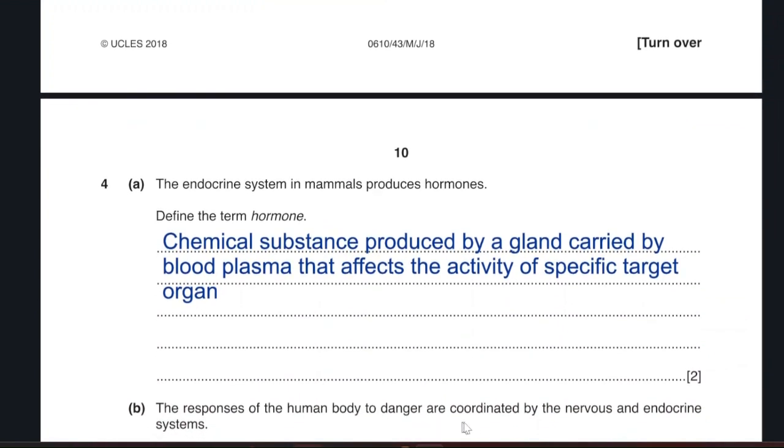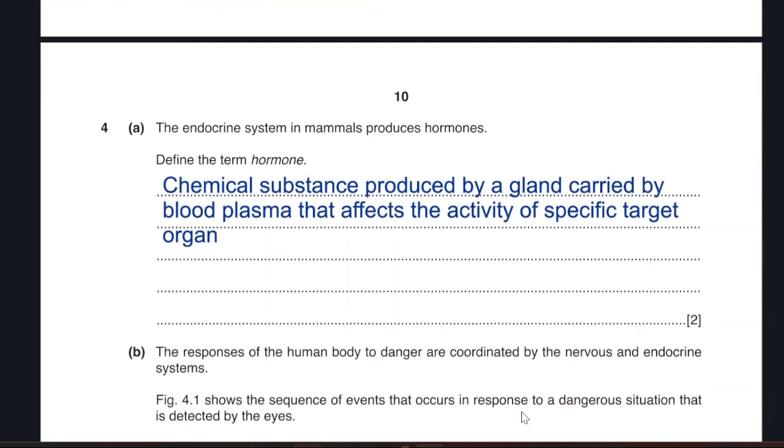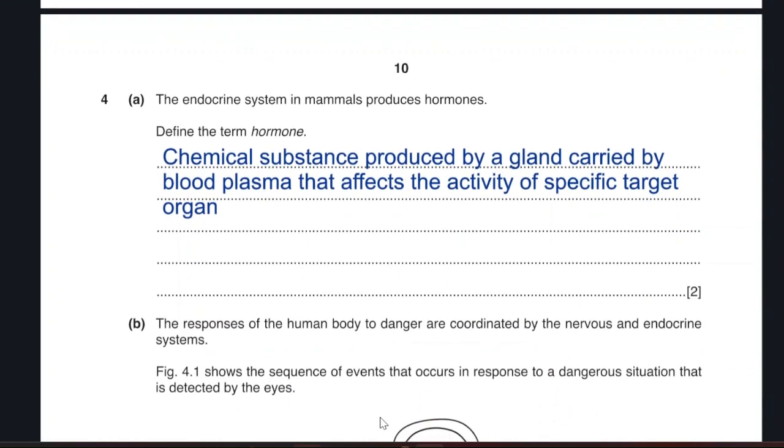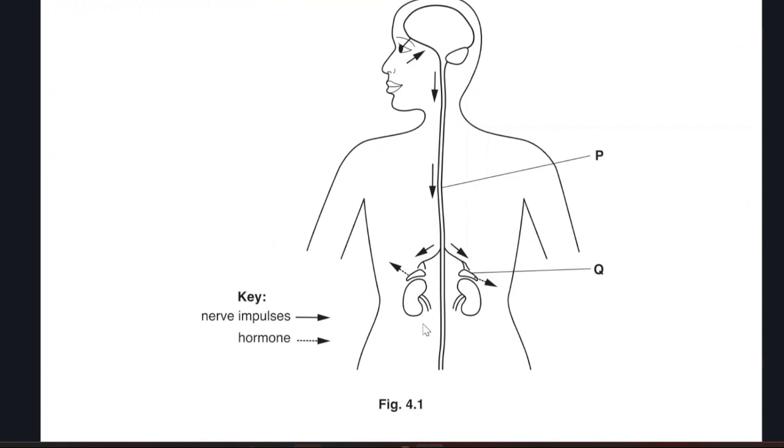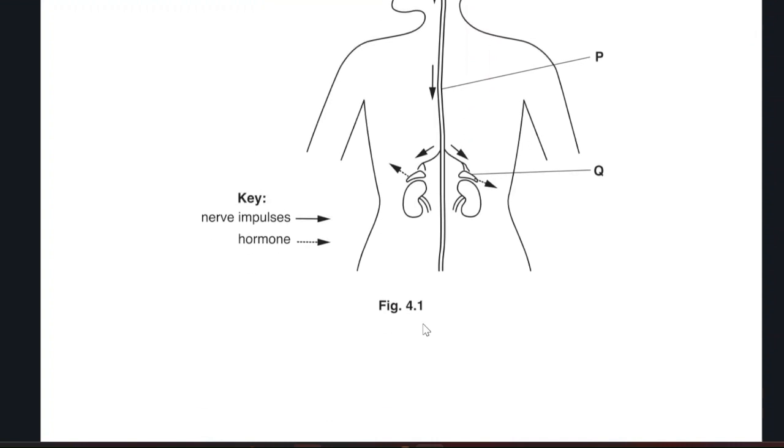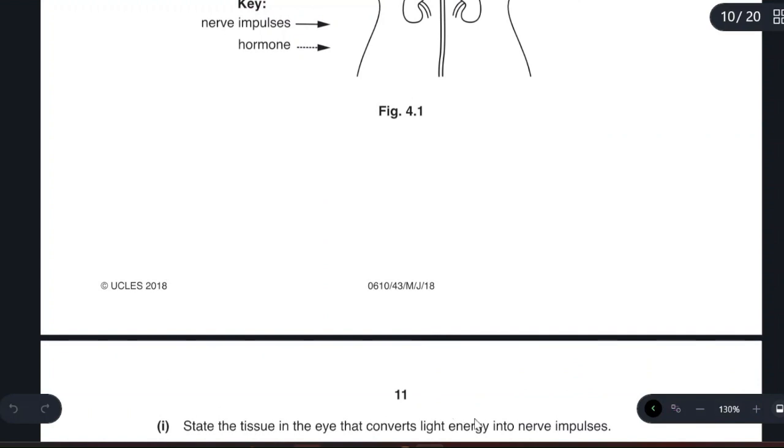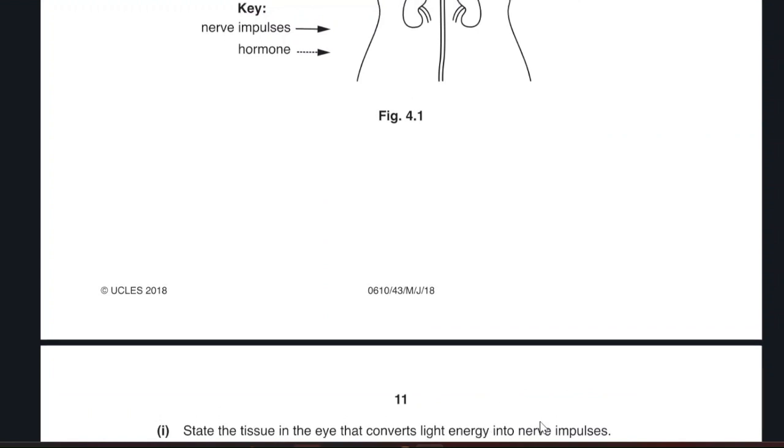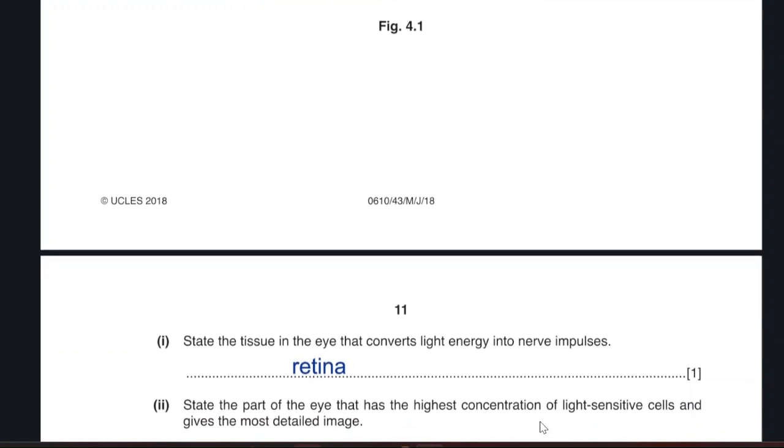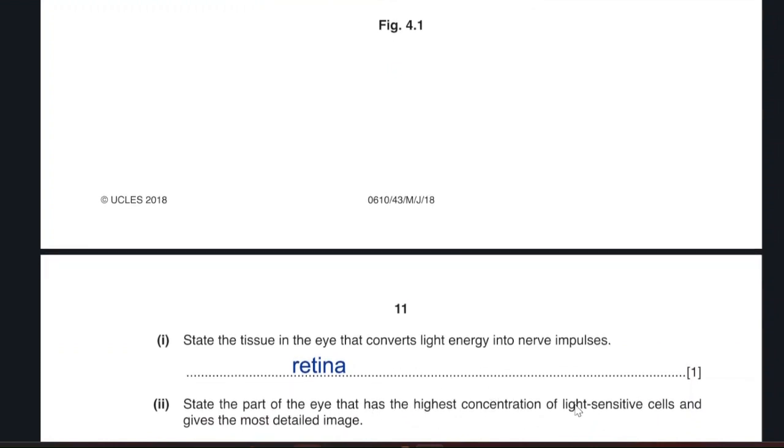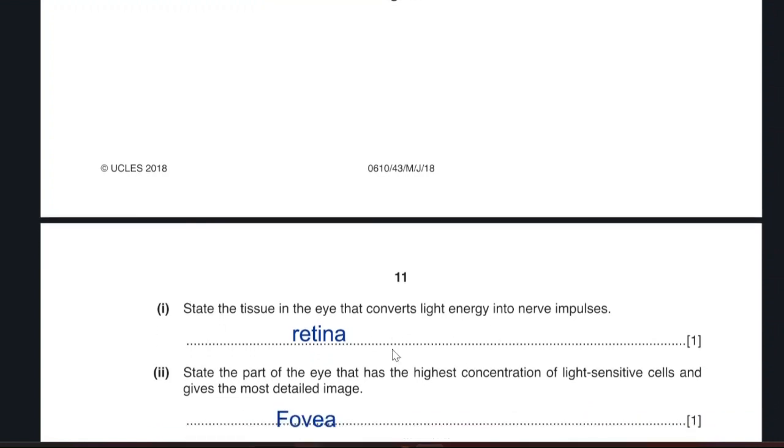The response of the human body to danger are coordinated by the nervous and the endocrine system. Figure 4.1 shows a sequence of events that occurs in response to dangerous situations. Here we have a sequence of events that happens when you are exposed to a dangerous situation. State the tissue in the eye that converts light energy to nerve impulses. The retina has receptors that detect the light energy converted into nerve impulses. What is the part of the eye that has the highest concentration of light-sensitive cells and gives the most detailed image? The fovea. The fovea or the yellow spot. It is the part which has the highest amount of light-sensitive cells. It has the best vision.